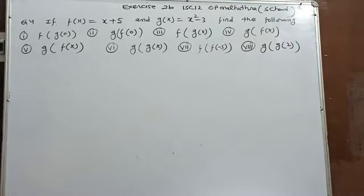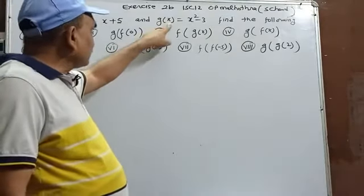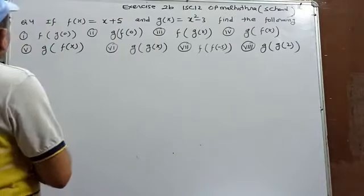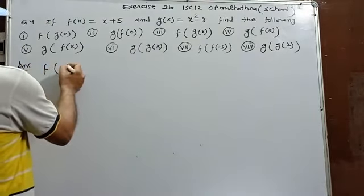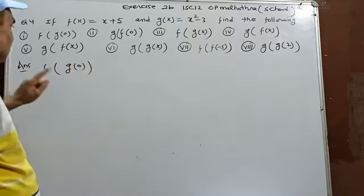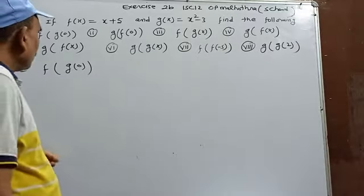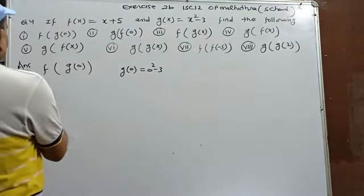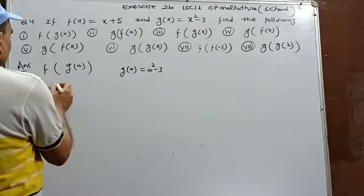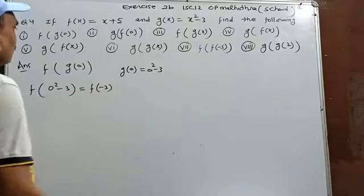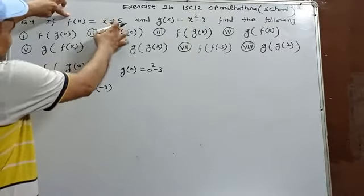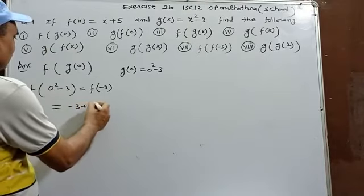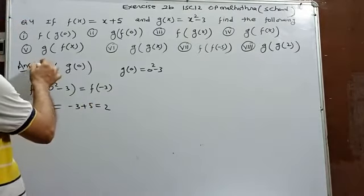Question 4: f(x)=x+5, g(x)=x²-3. Find fg(0): first g(0)=0²-3=-3, then f(-3)=-3+5=2. So fg(0)=2.